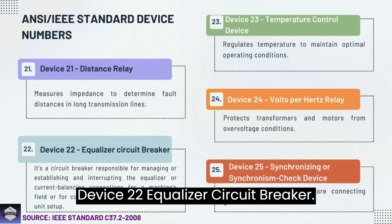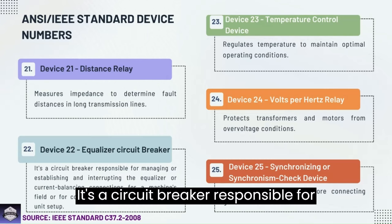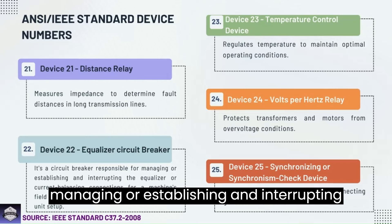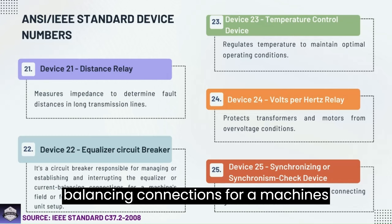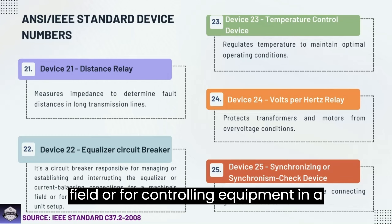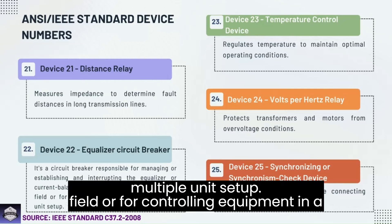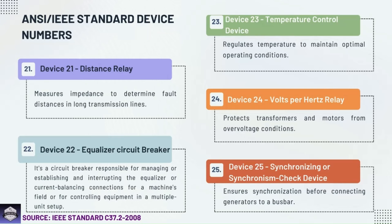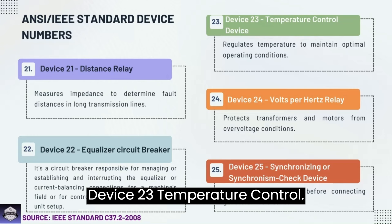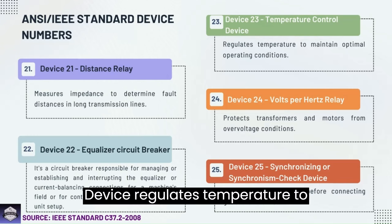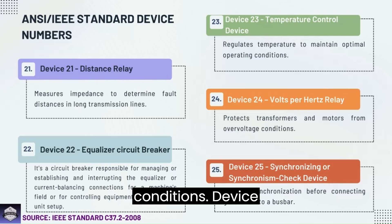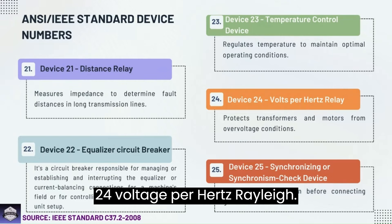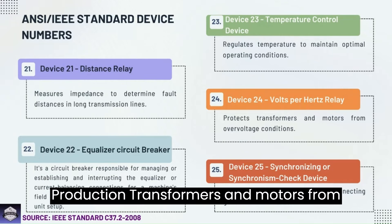Device 22: Equalizer circuit breaker — a circuit breaker responsible for managing, stabilizing, and interrupting the equalizer or circuit balancing connections for a machine's field or for controlling equipment in a multiple unit setup. Device 23: Temperature control device — regulates temperature to maintain optimal operating conditions. Device 24: Volts per Hertz relay — protects transformers and motors from overvoltage conditions.